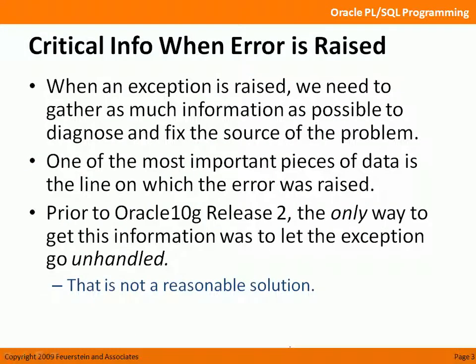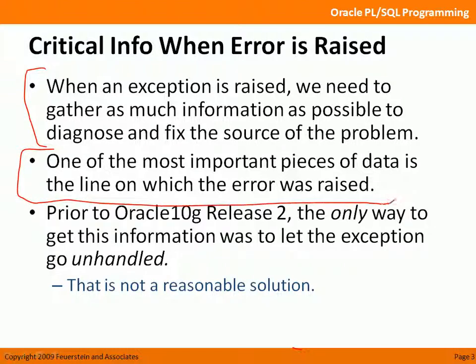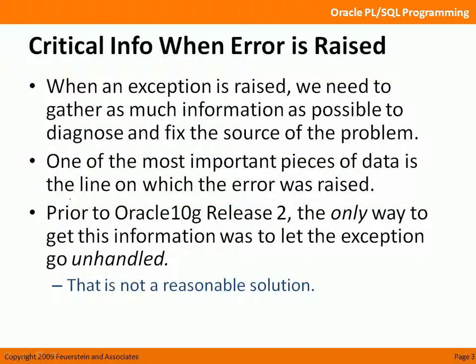When an error occurs in my program and an exception is raised, we need to gather as much information as possible to diagnose and fix the problem — what was going on, what were the values of my variables. One of the most important pieces of data is the line number on which the error was raised, so I can trace back to that part of my program. Without that line number, it's a lot harder to track down the problem.